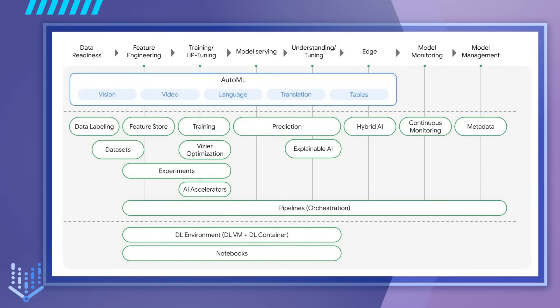This feature can save time and resources, allowing you to focus on more important aspects of your project. Additionally, Vertex AI provides a unified platform for managing the entire machine learning workflow, from data preparation and feature engineering to model deployment and monitoring. It also offers built-in integration with Google Cloud services, making it easier to work with other Google Cloud tools. Overall, Vertex AI is designed to help you streamline your machine learning workflows, reduce the time and resources needed to build and deploy models, and improve the accuracy and reliability of your machine learning models.